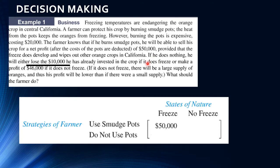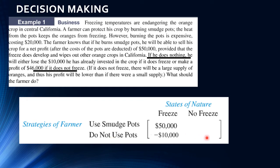Continuing on. If he does nothing — the bottom row — he will either lose $10,000 he has already invested if it does freeze, so losing $10,000 means his profit is negative $10,000. If he does nothing and it doesn't freeze, he gets $46,000.